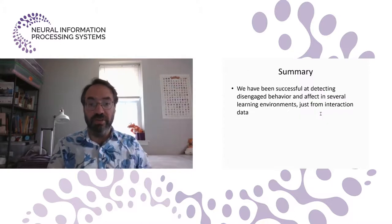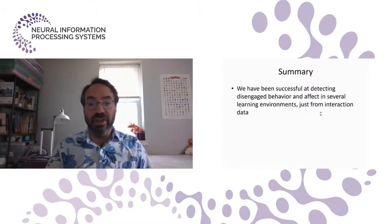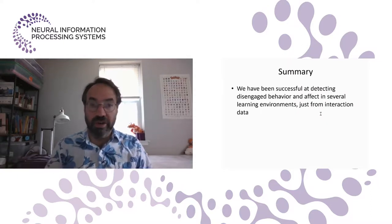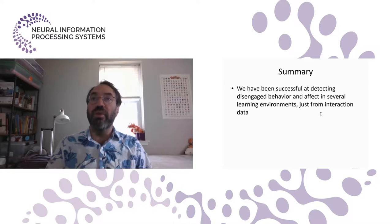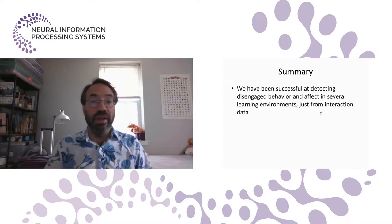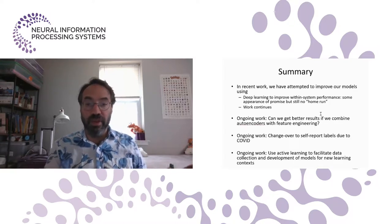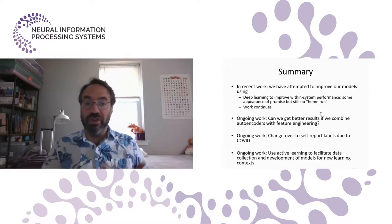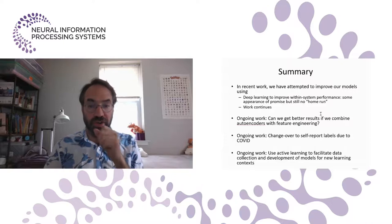So to summarize, we've been successful at detecting disengaged behavior and affect in several learning environments just from interaction data. And we have been using classic machine learning algorithms, but we've also been trying deep learning. It hasn't been a magic bullet yet. Our recent work has attempted to improve our models using deep learning. There's some appearance of promise, there's still no home run, and our work is continuing.